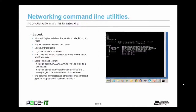Another useful utility is tracert — Microsoft's implementation of the traceroute command from Unix/Linux. It traces the route between two nodes as it goes through routers, also using ICMP requests. It logs responses from routers and the end node, but has limited usability as many routers block ICMP requests. It uses the same basic format as ping, beginning with 'tracert', and its behavior can be modified with the forward slash question mark.